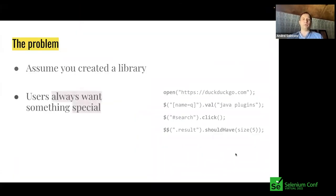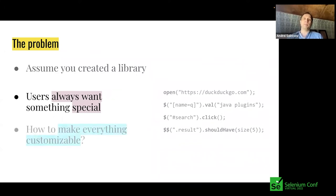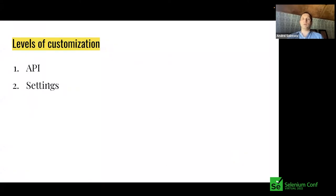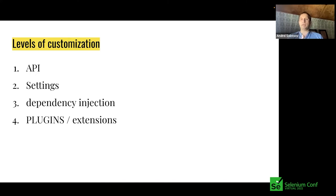This is our primary question today. Users always want something special — features not achievable by simple parameters. The essential question: if you have a library or tool, how do you make every aspect of it customizable? There are several levels. The simplest is allowing users to use API or settings. Another option is dependency injection — the Spring way. And another option used by Selenium, Selenide, and Mockito is a system of plugins or extensions.